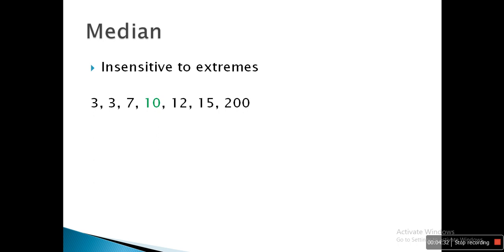Here is another important property: the median is insensitive to extreme values. In this example, the extreme value is 200, but the median value is 10. When we arrange numbers in ascending order, the median divides them in half, and extreme cases do not affect it. But it will never reveal the extreme cases — those can be found with the help of the mean.